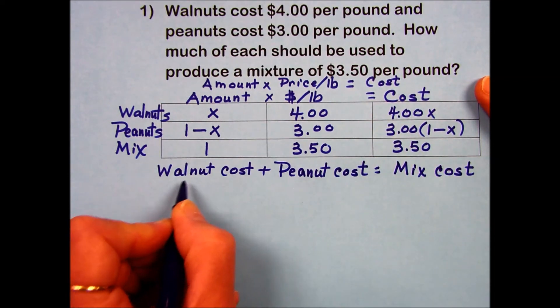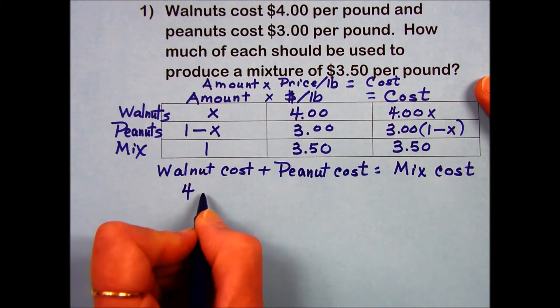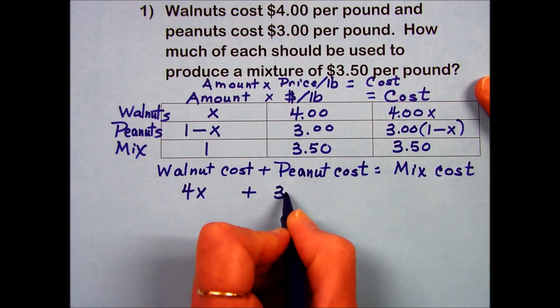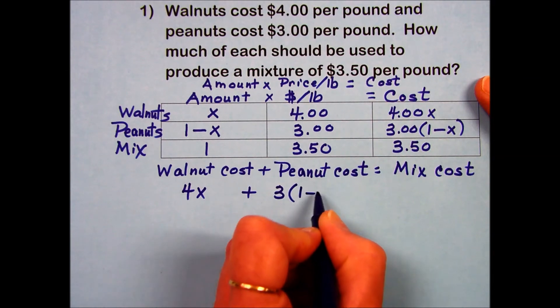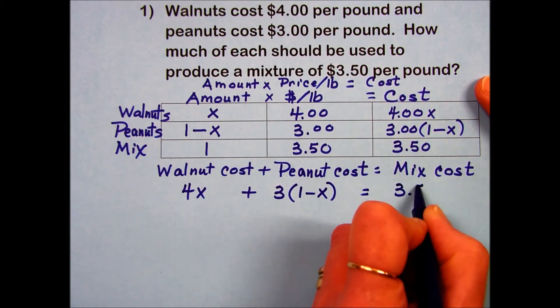Substituting in the values that we found, and I'm going to drop the cents on the walnut, $4. I'm going to leave it as 4x. Same with the $3—instead of indicating zero cents, I'm going to write it as a 3—is equal to the mix, $3.50.